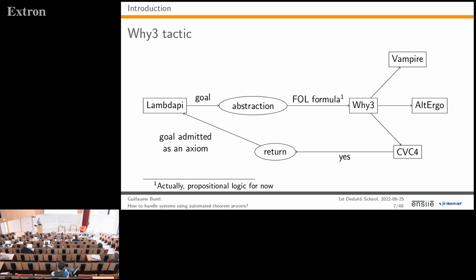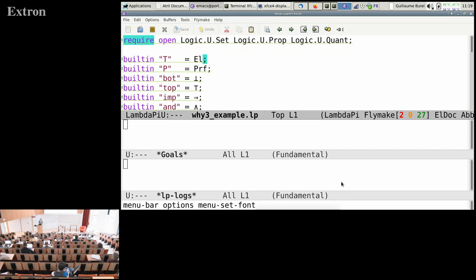If a prover reports finding a proof, what we can do for now is admit the goal as an axiom and trust the prover's result. It is not entirely satisfactory, but it is what is done at the moment. Let me show you a brief demo.